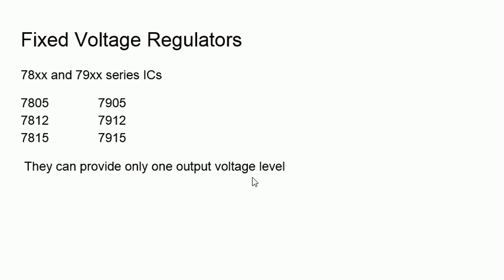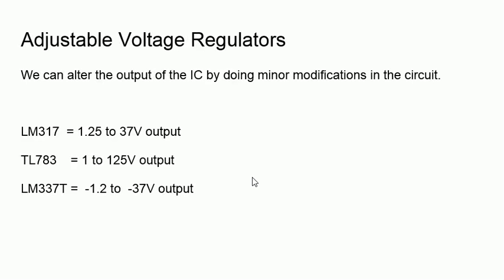In the market, apart from this one, we have some ICs whose output can be changed by doing little bit modifications. So the output can be adjusted by doing minor modifications of the circuit. Some of the ICs are LM317, TL783, LM337.